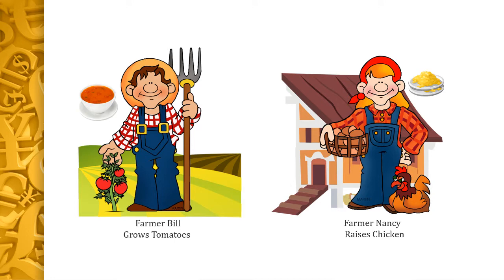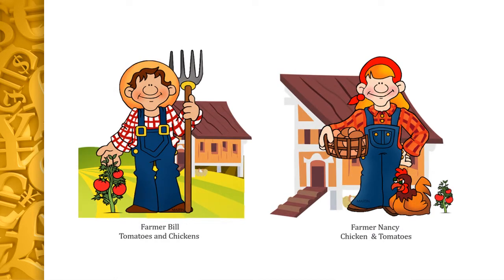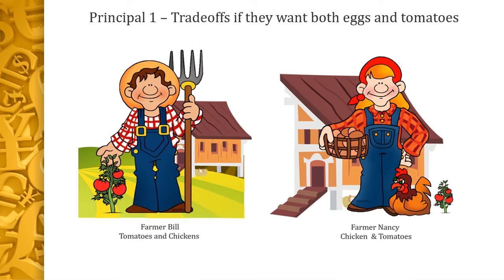After a couple of months, they start to get a little bored with their limited diets. One day at the edge of their land they meet, and Nancy talks about how tomato omelets would be really tasty. Farmer Bill thinks about poached eggs with spicy tomato sauce. Now, Nancy is going to plant some tomatoes and Farmer Bill is going to build a chicken coop — but is this really the most effective thing for each of them to do?